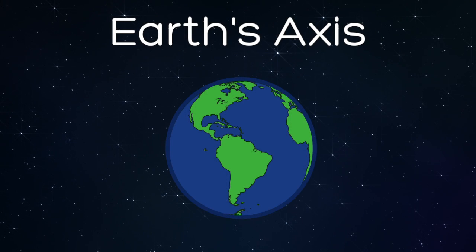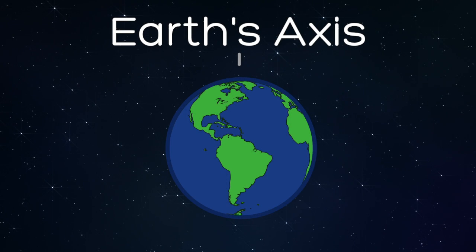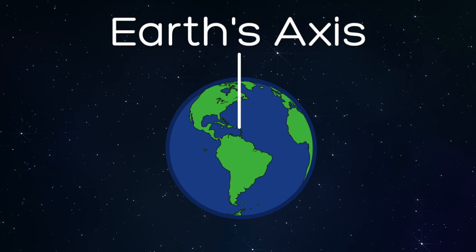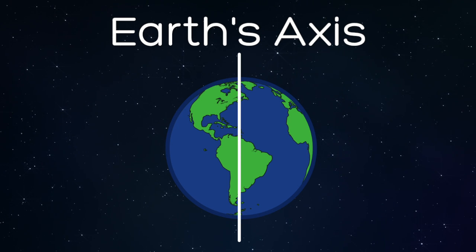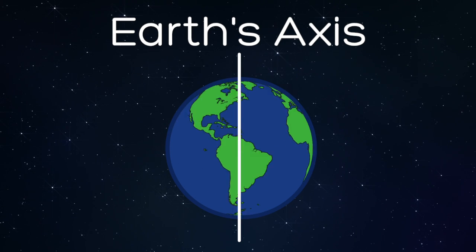First, we need to explain what the Earth's axis is. Imagine a line running from the North Pole through the center of the Earth and coming out at the South Pole. This would be the Earth's axis. The Earth spins around this axis.